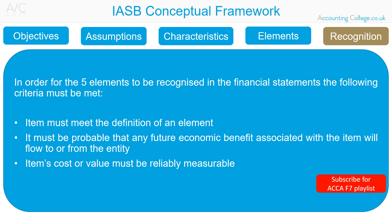Recognition of the Elements of Financial Statements: In order for the five elements — assets, liabilities, equity, income and expenses — to be recognised in the financial statements, the following criteria must be met. Firstly, the item must meet the definition of an element. Secondly, it must be probable that any future economic benefit associated with the item will flow to or from the entity. And finally, the item's cost or value must be reliably measurable.